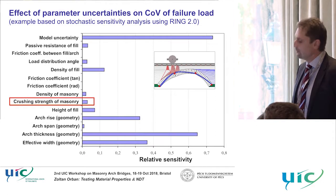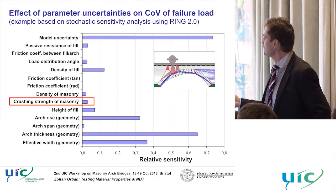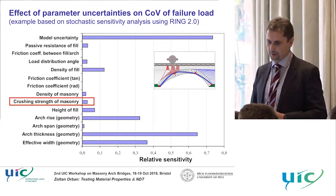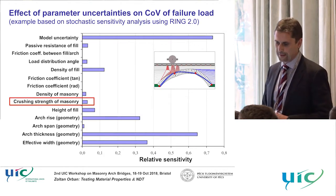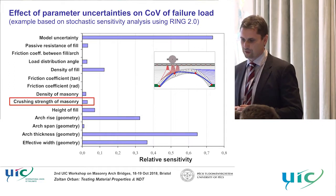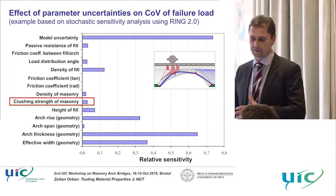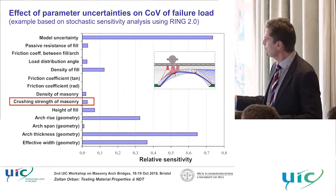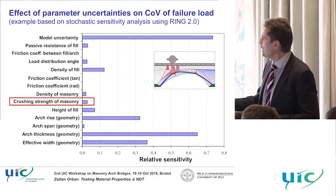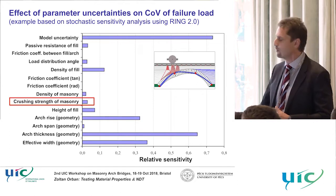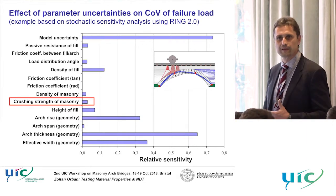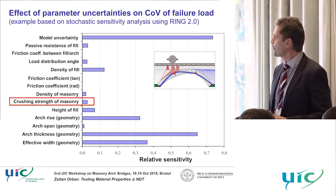We carried out a sensitivity analysis on a simple arch structure using RING analysis software with a stochastic probabilistic approach, treating input parameters as random variables. We found that crushing strength of masonry is not a determining parameter — the sensitivity factor is very low. Instead, arch thickness, effective width, rise, and geometry of the arch are much more important. This applies to a typical simple arch with normal strength.